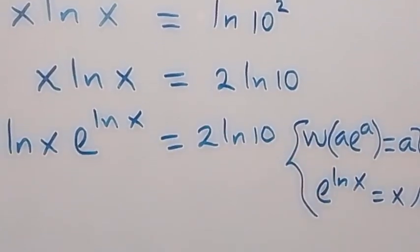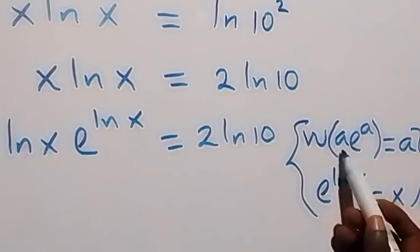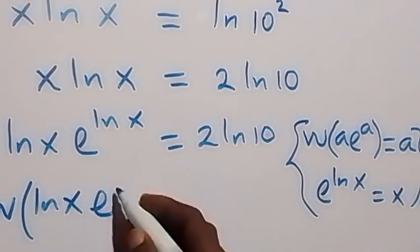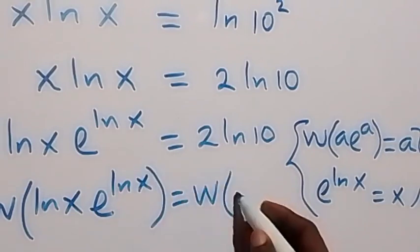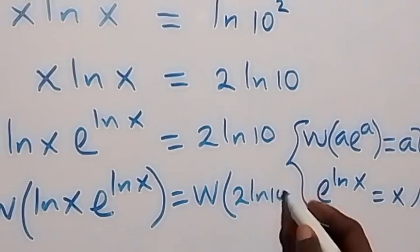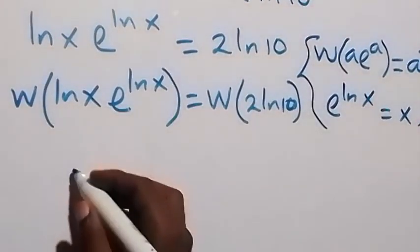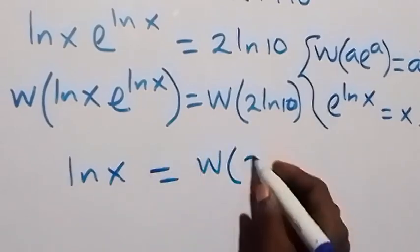From what we have here now, we can apply the W function on both sides. Here we have the power the same as the coefficient, which is what we need. We now apply W function of 2·ln 10, and this reduces to ln x equals to W of 2·ln 10.